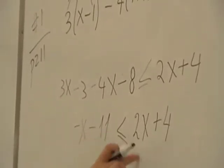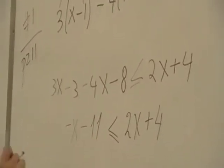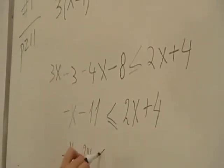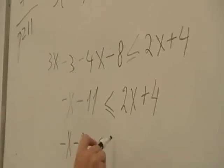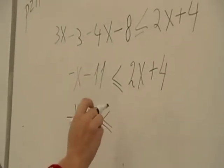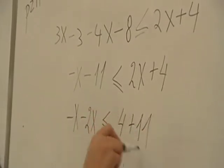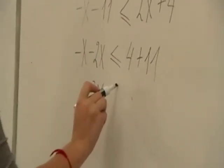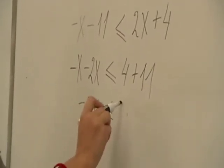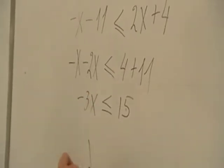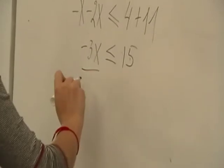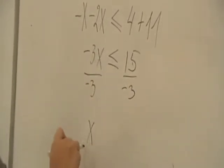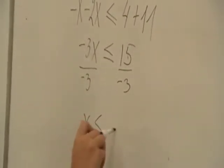Then put 2x on the left: minus x minus 2x gives minus 3x. Put the minus 11 on the right, so it becomes plus 11, giving minus 3x less than or equal to 15. Then divide by minus 3, and you get x less than or equal to minus 5.